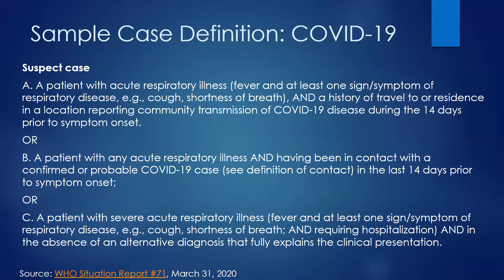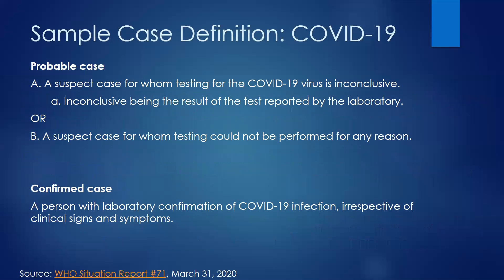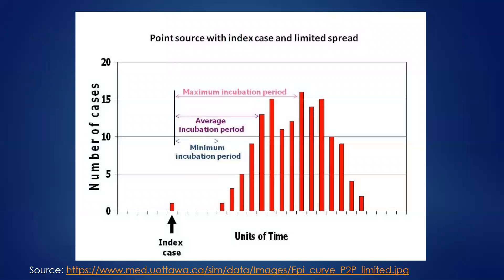Similarly, there have been changes in the case definition of COVID-19 over time as it has evolved. These definitions are from the end of March 2020, early in the outbreak. Suspected cases were defined by a certain set of symptoms with or without contact with someone confirmed or probable for COVID-19. A probable case adds the layer where they weren't able to be tested or the test came back inconclusive. A confirmed case is someone with a lab-confirmed test, regardless of whether they had signs and symptoms, since a substantial proportion of people infected are asymptomatic with COVID-19.